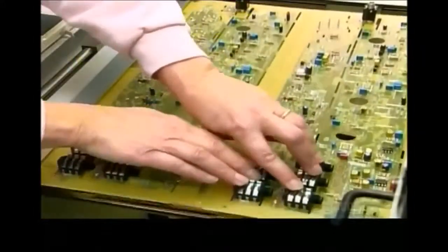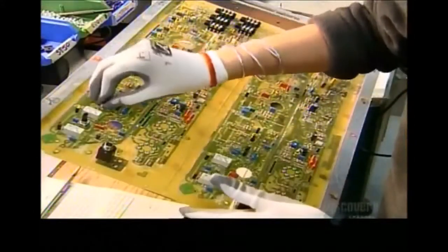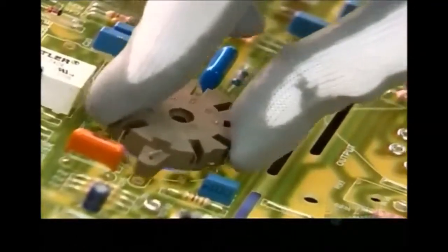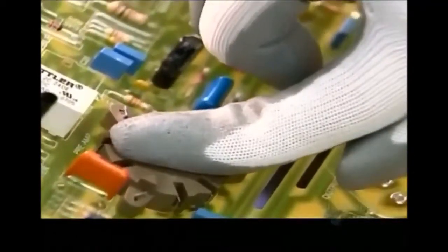As a worker provides counter-pressure, a machine folds over the leads of some larger components to secure them to the board until they're soldered. Workers then install large, irregular parts by hand. Among them, the sockets that hold the tubes which power the amp.